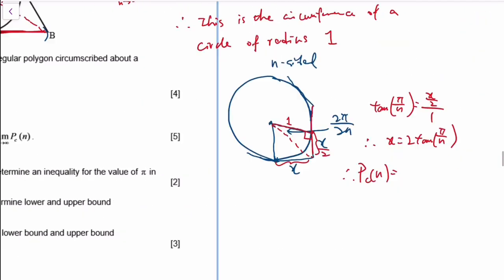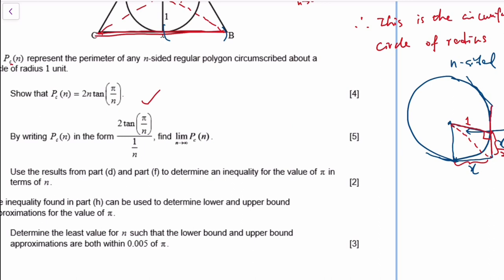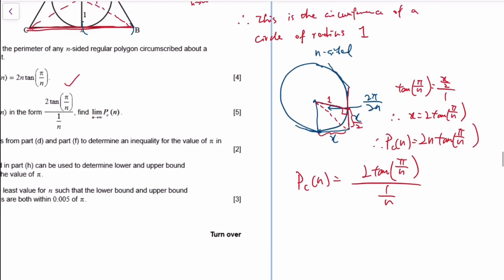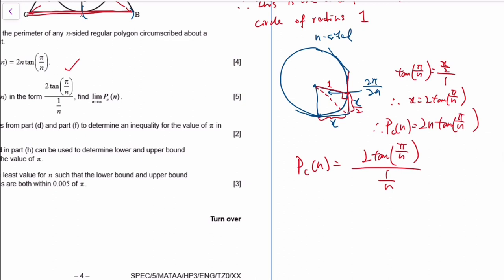Proved. Now find the limit. Can we do L'Hôpital's rule? On the other hand, there's no Maclaurin series for tangent in the formula booklet, which means we have no choice but to use L'Hôpital's rule. This is a 0/0 case.